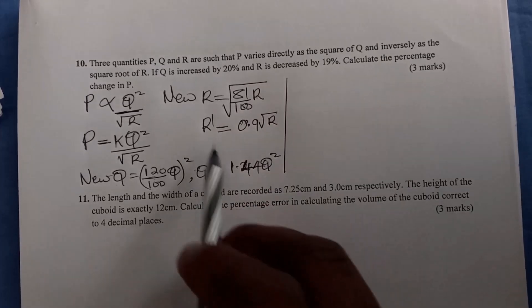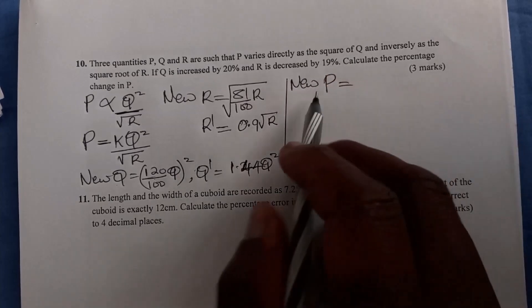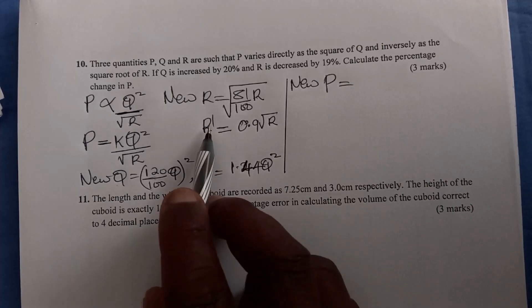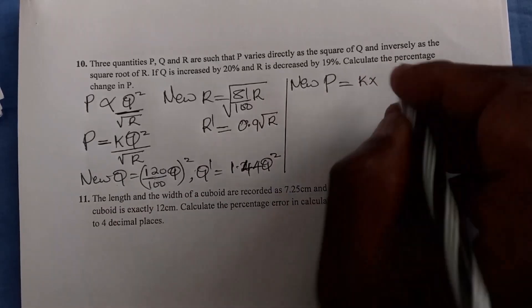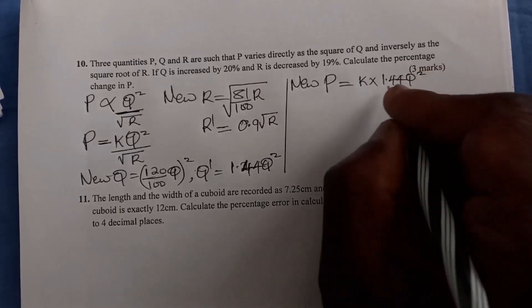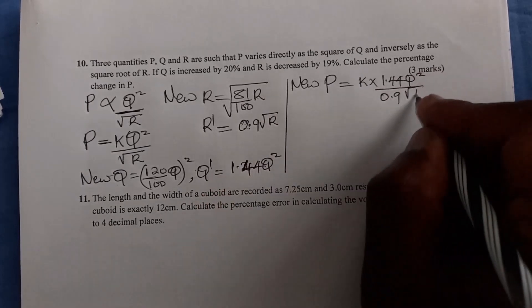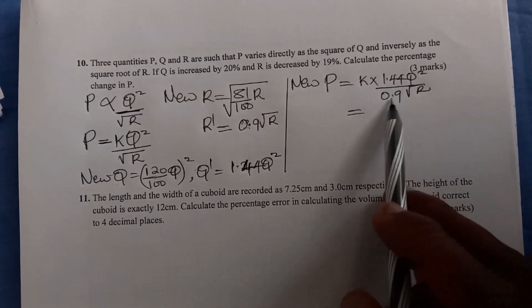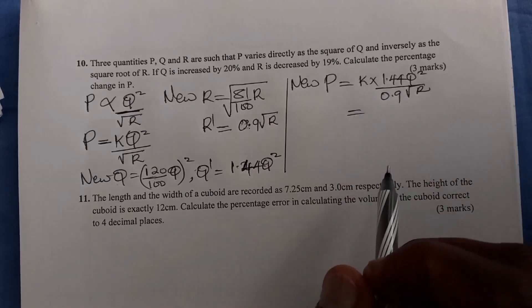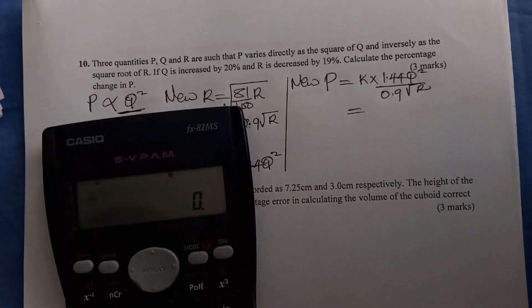Now having new Q and new R, we can therefore have new P. For new P, you're going to use the new values for Q and R. Look at the connection: we have K times Q squared - we got 1.44 Q squared - divided by 0.9 root of R. When you work out these, you take 1.44 divided by 0.9 and multiply by K. Using a calculator, 1.44 divided by 0.9 gives 1.6.